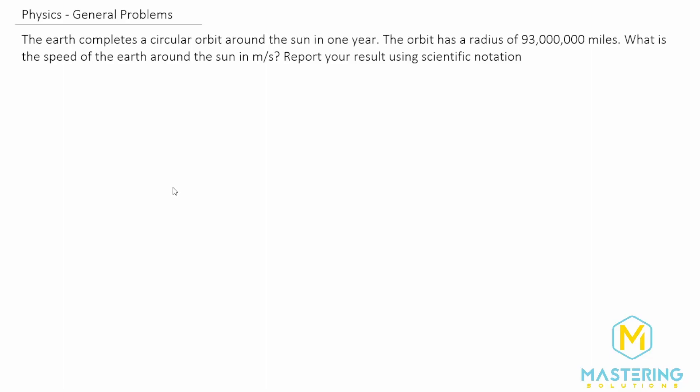Welcome to Mastering Solutions. In this general problem, they want us to find out what the speed is of the earth around the sun. They give us that the radius of the path that the earth moves around the sun is 93 million miles.